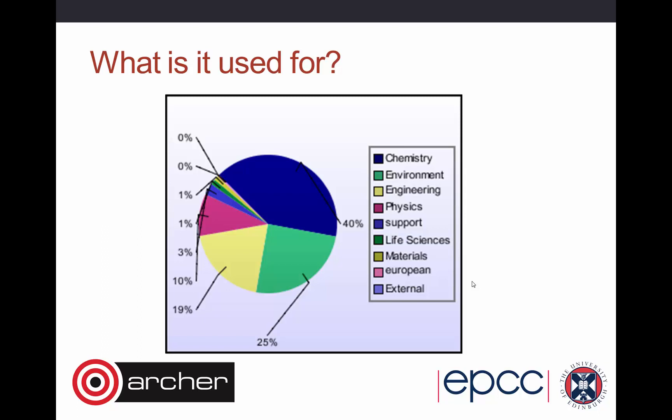What is Archer used for? It's used by a lot of chemistry — there are very well-optimized parallel computational chemistry packages for chemistry and materials science. There's a lot of environmental work on climate research and engineering, and physics. Chemistry, environment, engineering, and physics are the four main areas, with a reasonable amount of life sciences work as well.